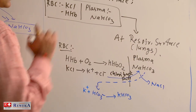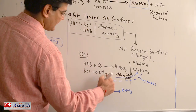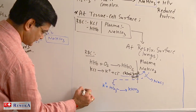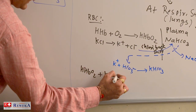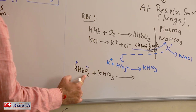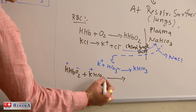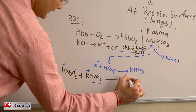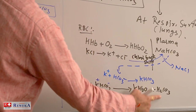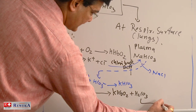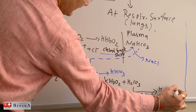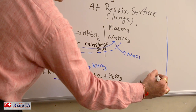Now, HHbO2 and KHCO3 react: H+ and HbO2- along with K+ and HCO3- react to form KHbO2 and H2CO3. The H2CO3 formed at the respiratory surface undergoes ionization with the help of the carbonic anhydrase enzyme to form H2O and carbon dioxide. This carbon dioxide is exhaled outside.